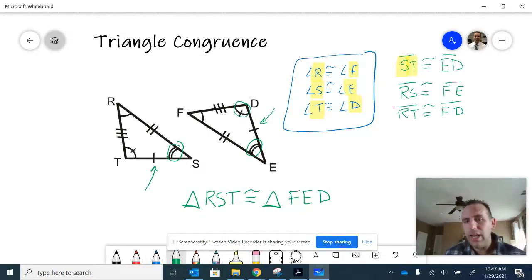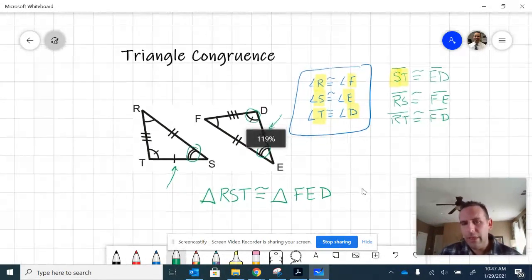You would not want to put R-S-T is congruent to E-D-F. Even though those are talking about the same triangles, I want to name it so that the angles, as I write them down, are corresponding to each other. I'm hopeful that that makes sense there.